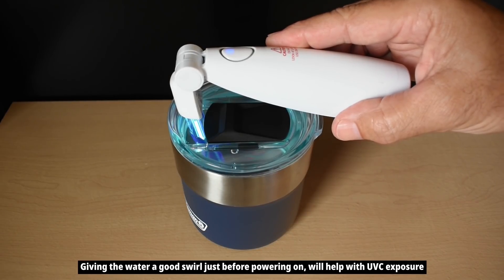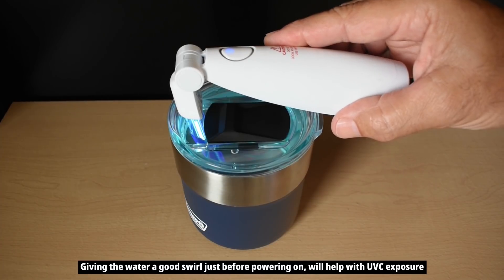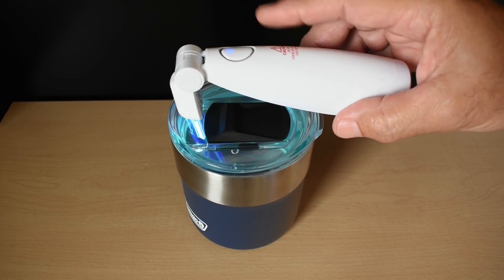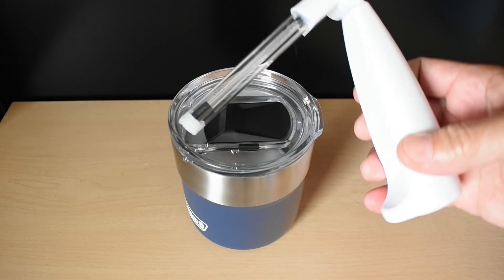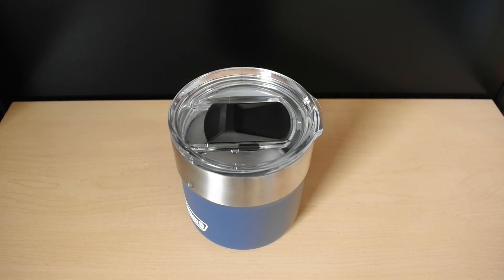That's 10 seconds, it's going to beep every 10. After 4 to 6 beeps, you're going to be good. Simply push the button, turn it off, wipe off the tube, and you're ready to drink your water.